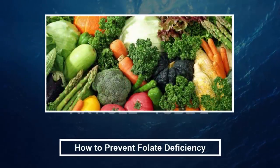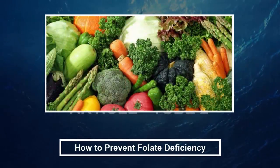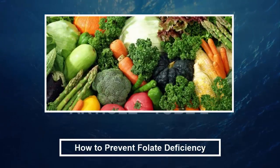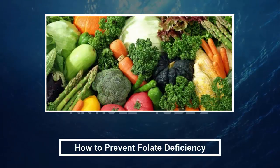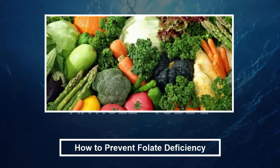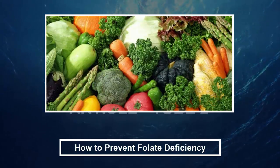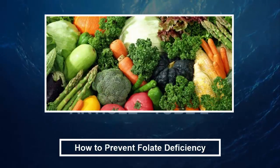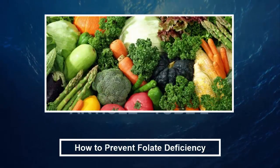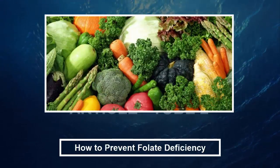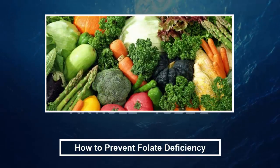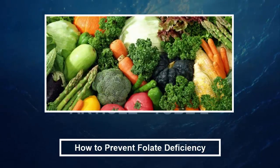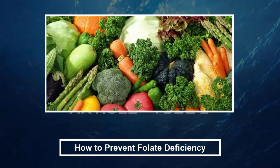How to prevent folate deficiency. Folate is largely found in plant foods, so the best way to get adequate folate and prevent folate deficiency is to eat five or more servings of whole foods like fruits and vegetables daily. Green vegetables, nutritious brussels sprouts, broccoli and peas, especially all types of leafy greens, along with beans and citrus fruits are particularly important for preventing folate deficiency.